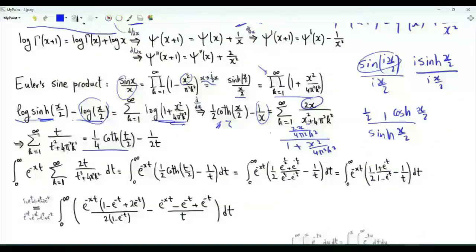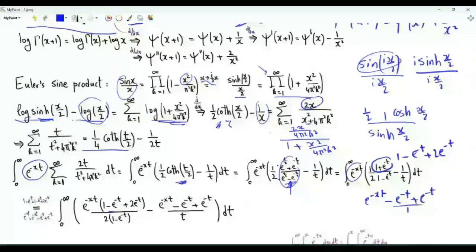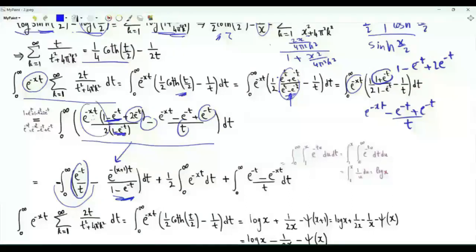Multiplying both sides by e^{-xt} and integrating over positive t, the hyperbolic cotangent of t/2 can be written as (1 + e^{-t})/(1 - e^{-t}). After algebraic manipulation, we write (1 + e^{-t}) as (1 - e^{-t}) + 2e^{-t}, and split the expression into components: minus e^{-t}/t, plus (e^{-xt} - e^{-t})/(1 - e^{-t}), plus e^{-xt}/2. The remaining terms are (e^{-t} - e^{-xt})/t.